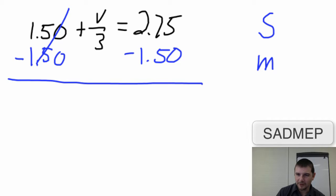And now we move a bit closer, well, a large amount closer to having v isolated. We now only have one term with v remaining. We have v divided by 3 equals $2.75 minus $1.50, $1.25.